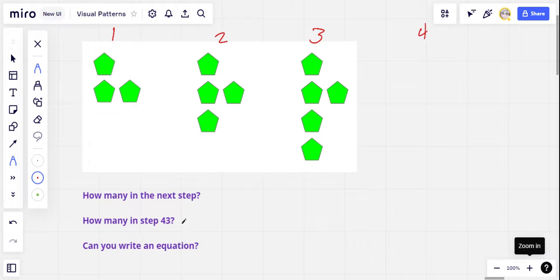And if you can, how many in step number 43? And could you write an equation that would predict the number of pentagons in any step at all? So if you'd like to take that challenge, pause the video, give it a try.